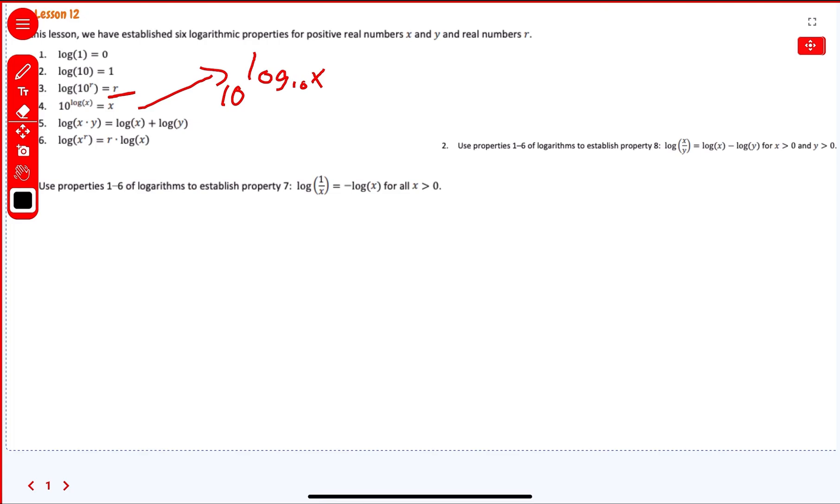Now, using the properties from 1 through 6 of logarithms to establish property 7, so this is a new property here, log 1 over x is equal to a negative log x. And we've already talked about this a little bit, but why is that?